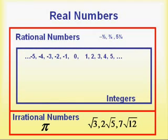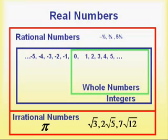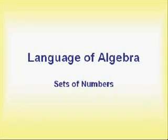Inside the rational numbers are contained the integers we talked about earlier, and inside the integers are contained the whole numbers, and inside the whole numbers are contained the natural numbers. So every natural number is also a whole number, is also an integer, is also a rational number. And every integer is also a rational number. These are the types of numbers we're going to work with in an algebra class.